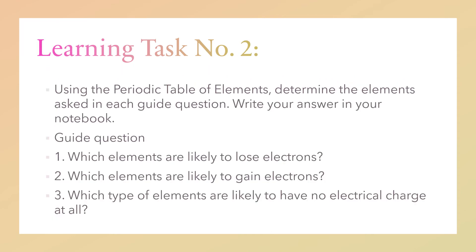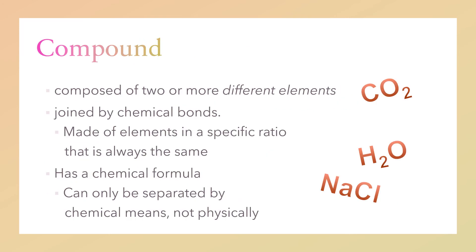Learning task number two. If you followed my discussion a while ago describing the elements, you will know this answer. You will just write what elements are likely to lose electrons and what elements likely to gain electrons. Also, which type of elements are likely to have no electrical charge. You can give one element.